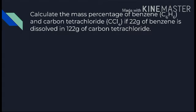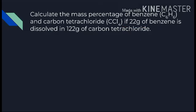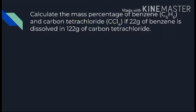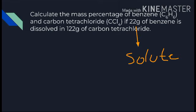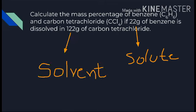Calculate the mass percentage of benzene and carbon tetrachloride if 22 grams of benzene is dissolved in 122 grams of carbon tetrachloride. First, let's read the question carefully. We need to calculate the mass percentage of benzene. The given values are: 22 grams benzene — this is the solute — and 122 grams carbon tetrachloride — this is the solvent.